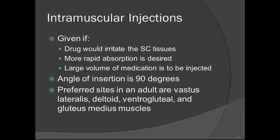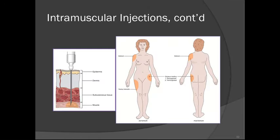Intramuscular injections are given when a drug would irritate the subcutaneous tissue, more rapid absorption is desired, or a large volume of medication is to be injected. The angle of insertion is 90 degrees. Typically given in the vastus lateralis, dorsal gluteal, or deltoid muscles. Always aspirate with intramuscular injections. The needle must pass all the way through the dermis and subcutaneous tissue to reach the muscle layer.